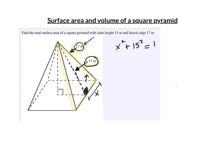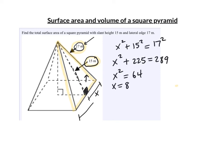Solving: x² + 225 = 289, so x² = 64, meaning x = 8. Since x is half the base edge, the full base edge is 2 × 8 = 16.